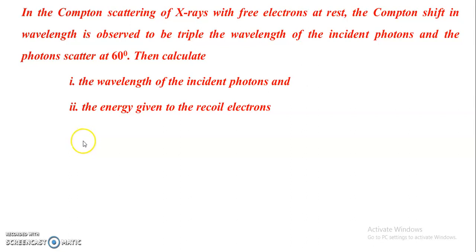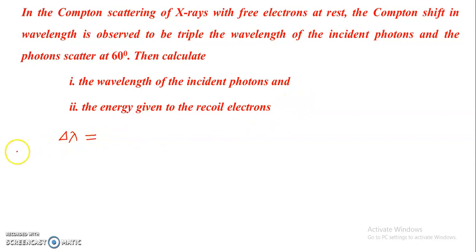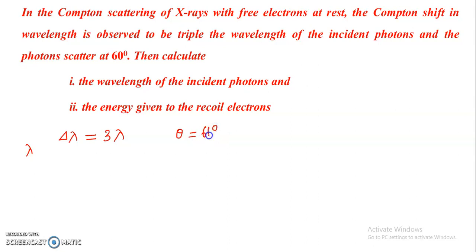In this problem it is given that the Compton shift in wavelength, usually denoted by delta lambda, is 3 times the wavelength of the incident photons. If the incident photon wavelength is lambda, then delta lambda equals 3 times lambda. It is also given that photons scatter at an angle of 60 degrees, that is theta equals 60 degrees.